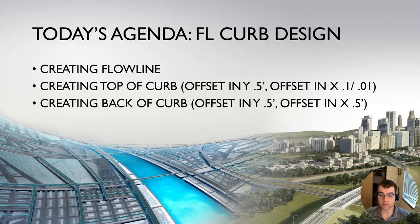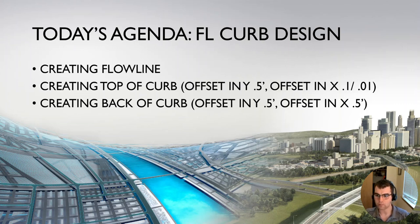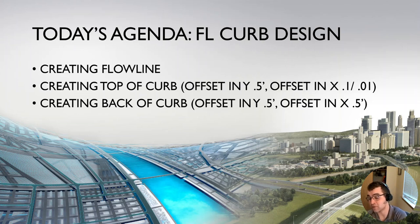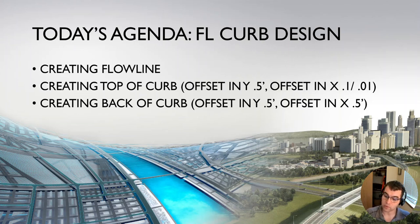Keep in mind when you offset, the feature line can't be right on top of the flow line - it needs to be offset back some distance. 0.01 feet is the minimum you can do, but a tenth of a foot is another common practice. Generally when we work with machine control, a tenth of a foot gives more margin of error and is easier to select. We're going to create our back of curve offsetting from the original feature line at 0.5 horizontal and 0.5 elevation.